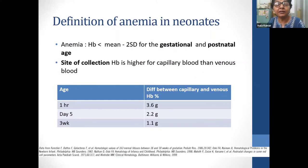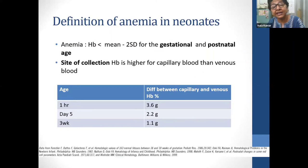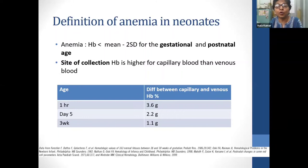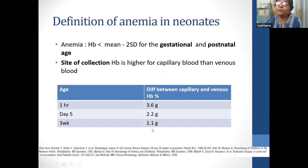How does one define anemia? We say a baby is anemic if hemoglobin is less than the mean for that gestational age and postnatal age minus 2 SD. It's also important to remember the site of blood collection, because capillary blood hemoglobin is higher than venous blood hemoglobin. At one hour of age the difference is as much as 3.6 grams, and by three weeks of age the difference is still around 1.1 gram per deciliter, which is quite significant.